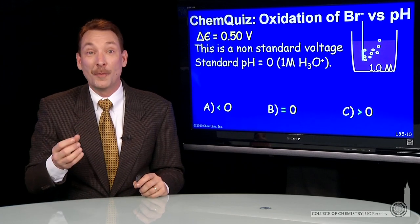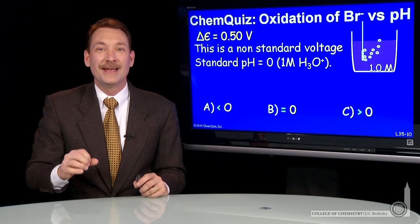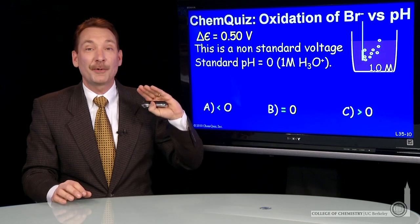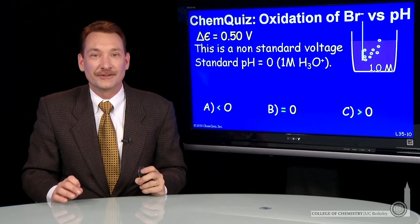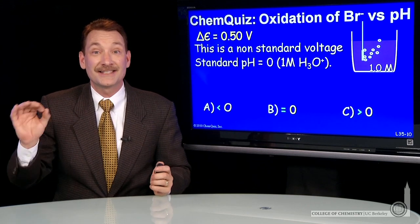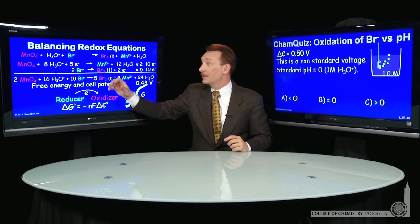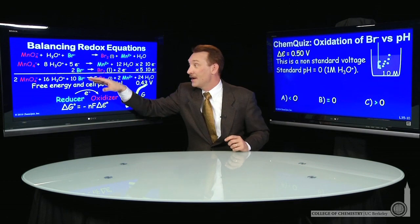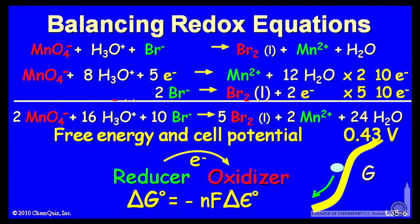We're looking at the oxidation of bromide by permanganate, and we find that cell is operating at 0.5 volts. So how can that happen? Well, let's look back at the standard reaction. Recall when permanganate and bromine react, the standard cell potential is 0.43 volts.